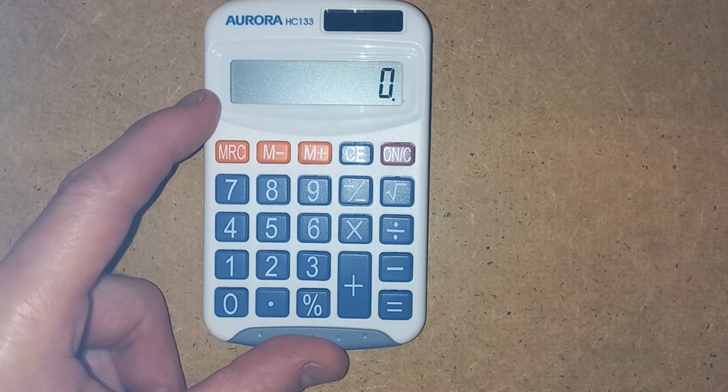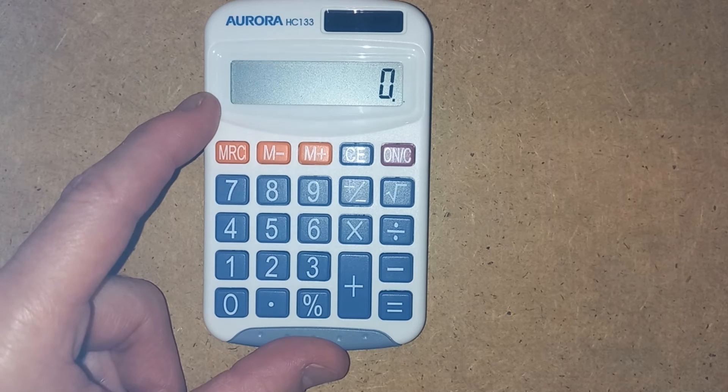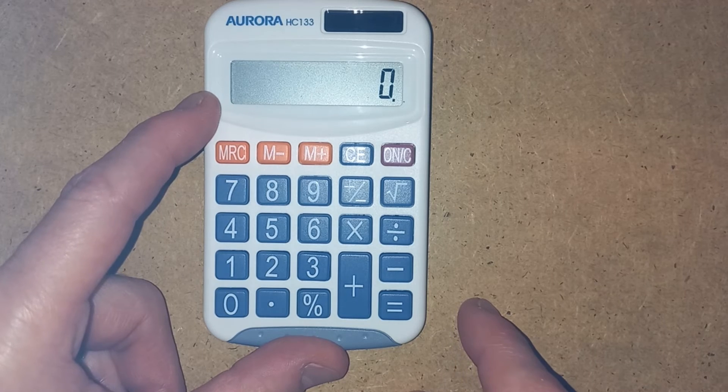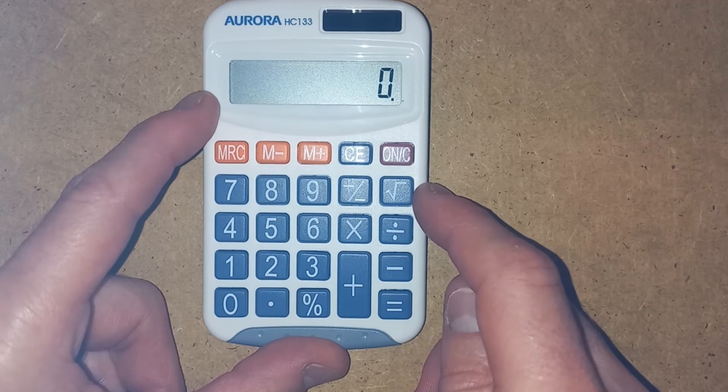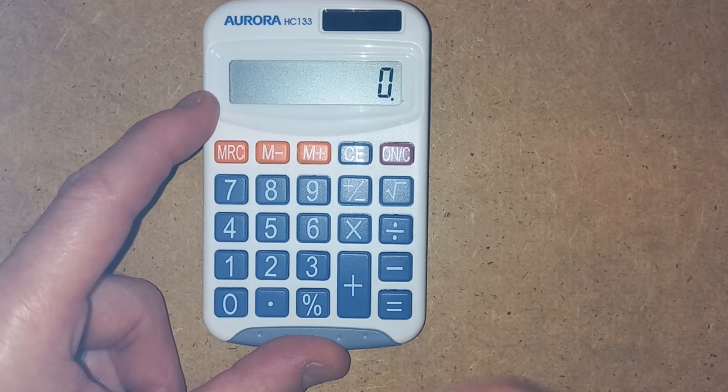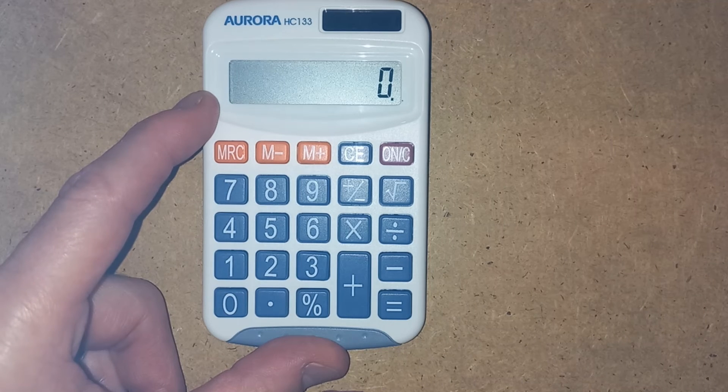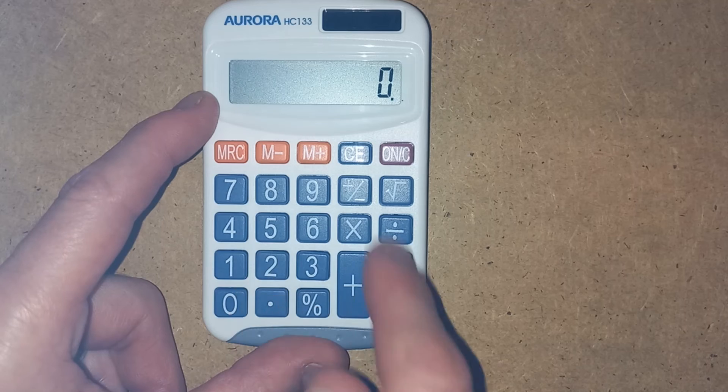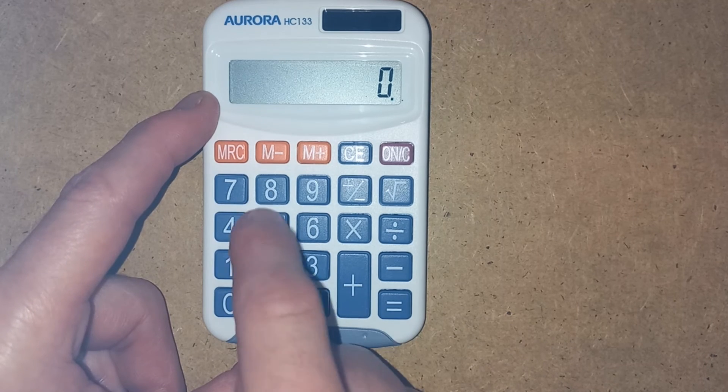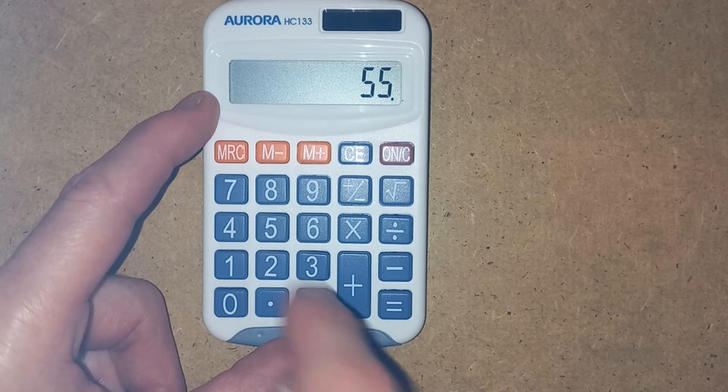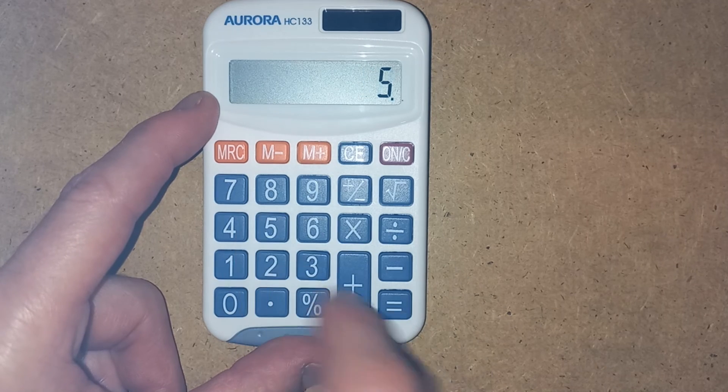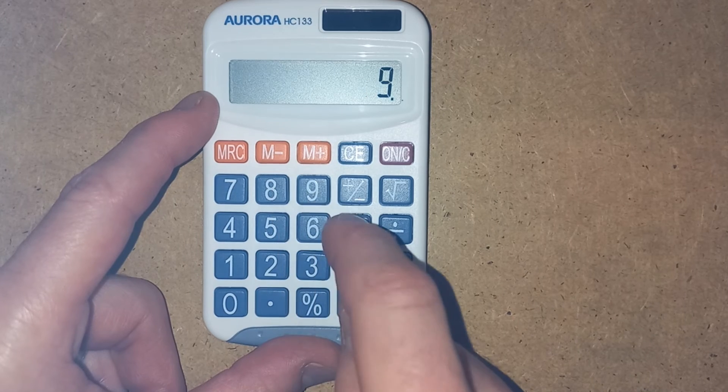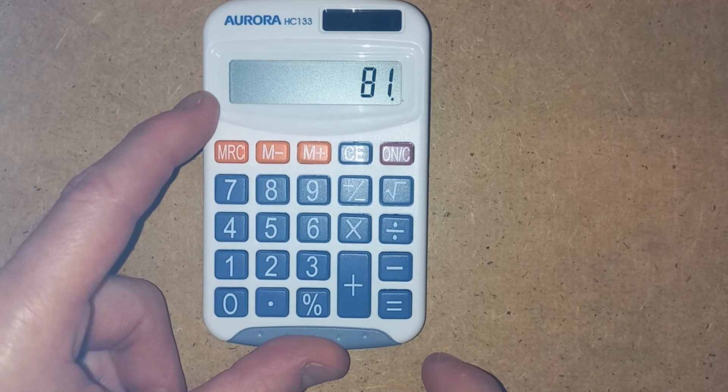So we've used pretty much every button on here. I think the only one we haven't used yet is this funny tick here, which some of you will know as the square root sign. So if we're doing square numbers, for example, if we want 5 squared, on a simple calculator, we haven't got a squared button. So we would just do 5 times 5 to give us 25. Or 9 times 9 to give us 81.